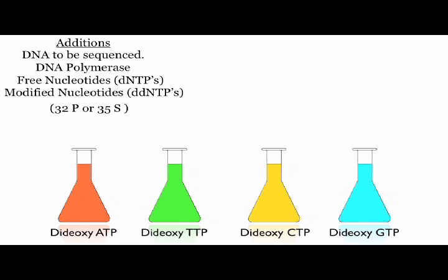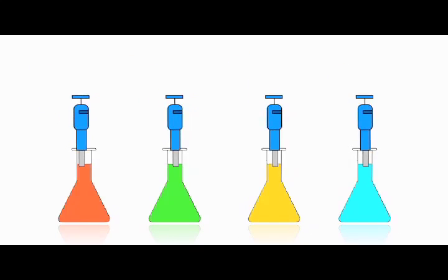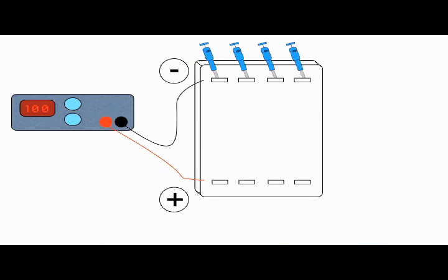The DNA must now be separated by size. This is done using a process known as gel electrophoresis. A sample of each of the four reaction mixtures is taken and pipetted into a separate lane on the gel.